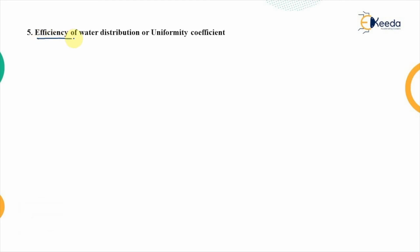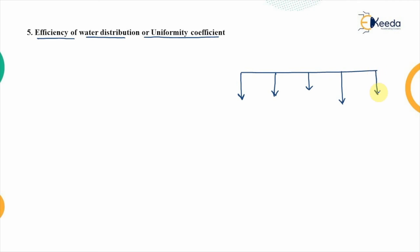The last type of efficiency is the efficiency of water distribution, also known as the uniformity coefficient. When looking at a crop, irrigation is performed at certain intervals, so there is a certain frequency of irrigation. At each irrigation event, there will be a certain depth up to which the water is stored, represented as D1 to D5. The capital D represents the average depth of storage.